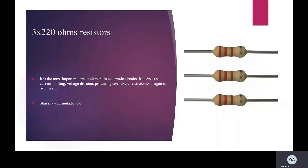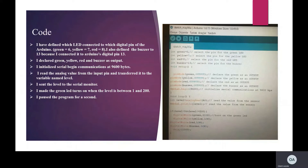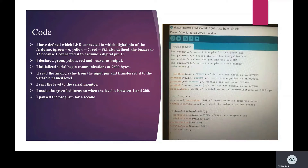Now let's look at the code part. I defined which LED is connected to which digital pin of the Arduino: green to pin 6, yellow to pin 7, and red to pin 8. I also declared the buzzer to pin 13 because I connected it to Arduino's digital pin 13. I declared green, yellow, red, and buzzer as outputs. I initialized serial communication at 9600 baud. Then I read the analog value from the input pin and transferred it to the variable level. I sent the level to the serial monitor. I made the green LED turn on when the level is between 1 and 200, then paused the program for one second.